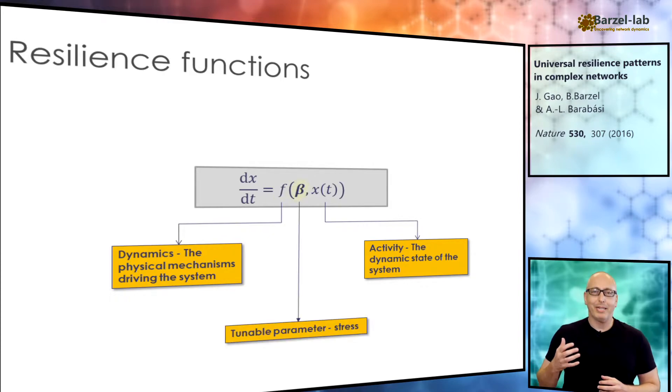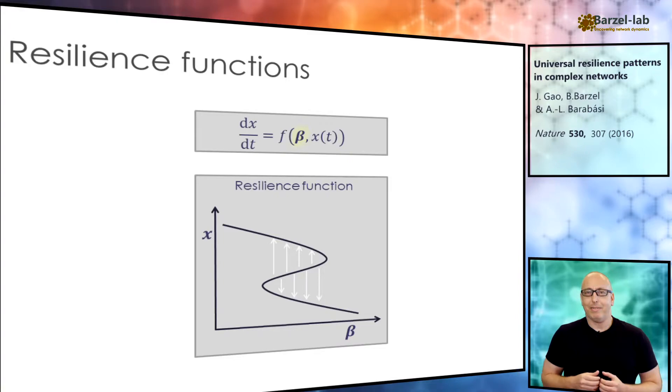On the other hand, the parameter beta is a tunable parameter. For example, if you increase the temperature, or change the ocean acidity, or just add or deplete nutrients from your cell, all of those disturbances or stress factors, they are all perturbations to beta. Now, as you change beta, the state of the system responds and changes accordingly.